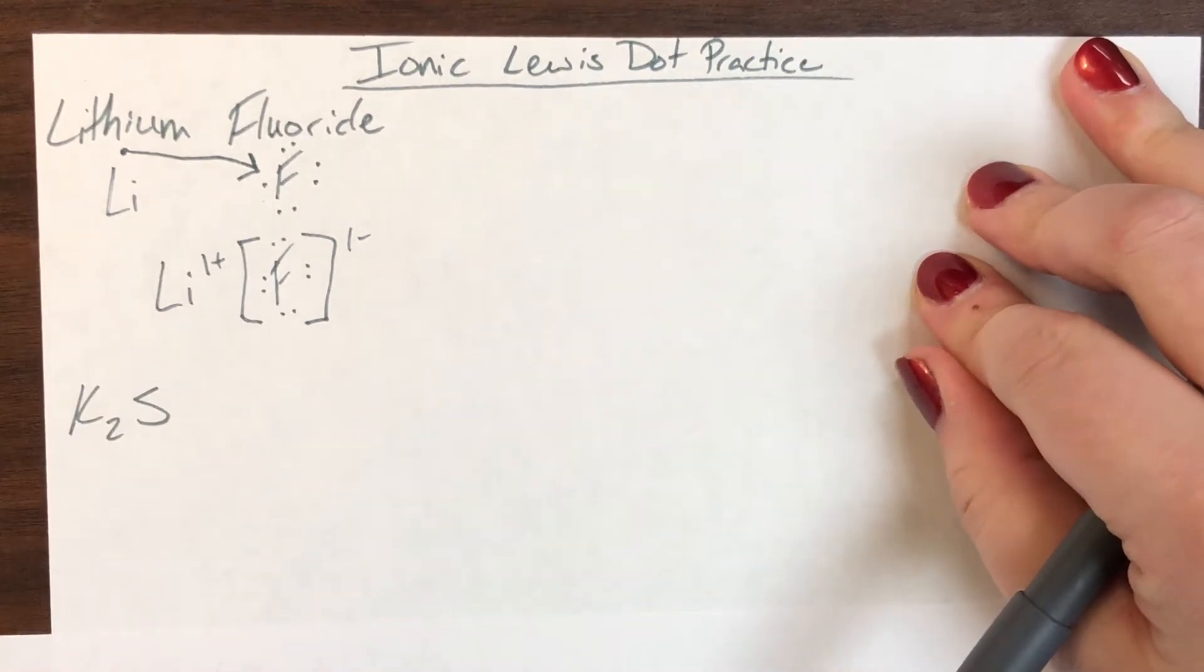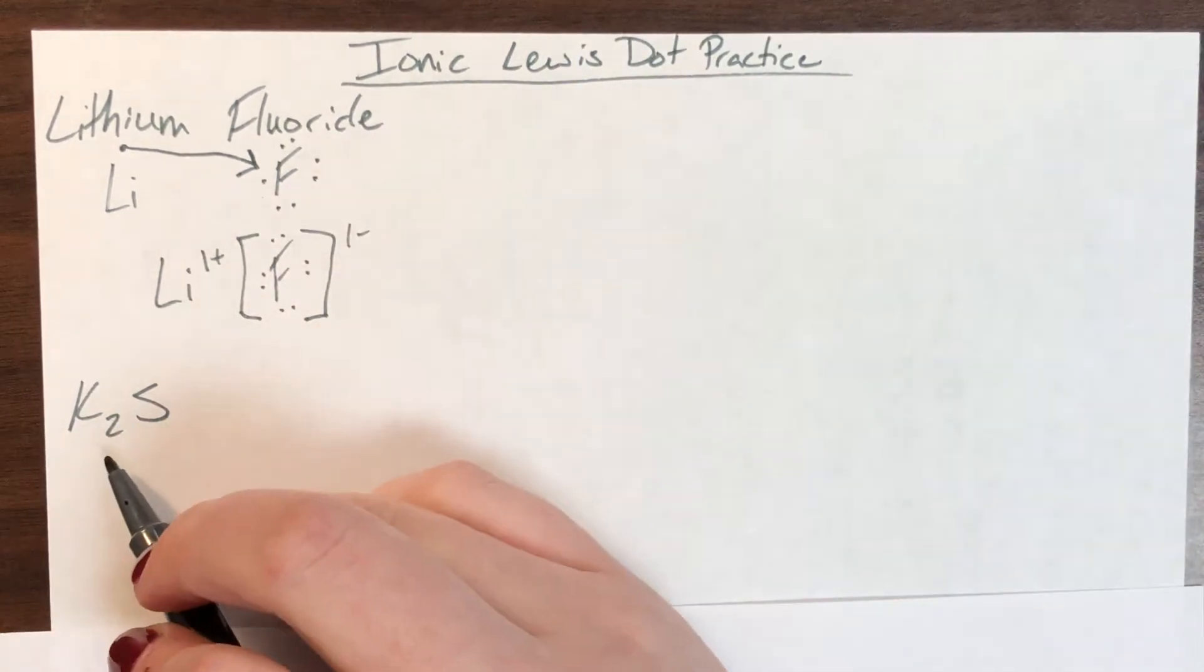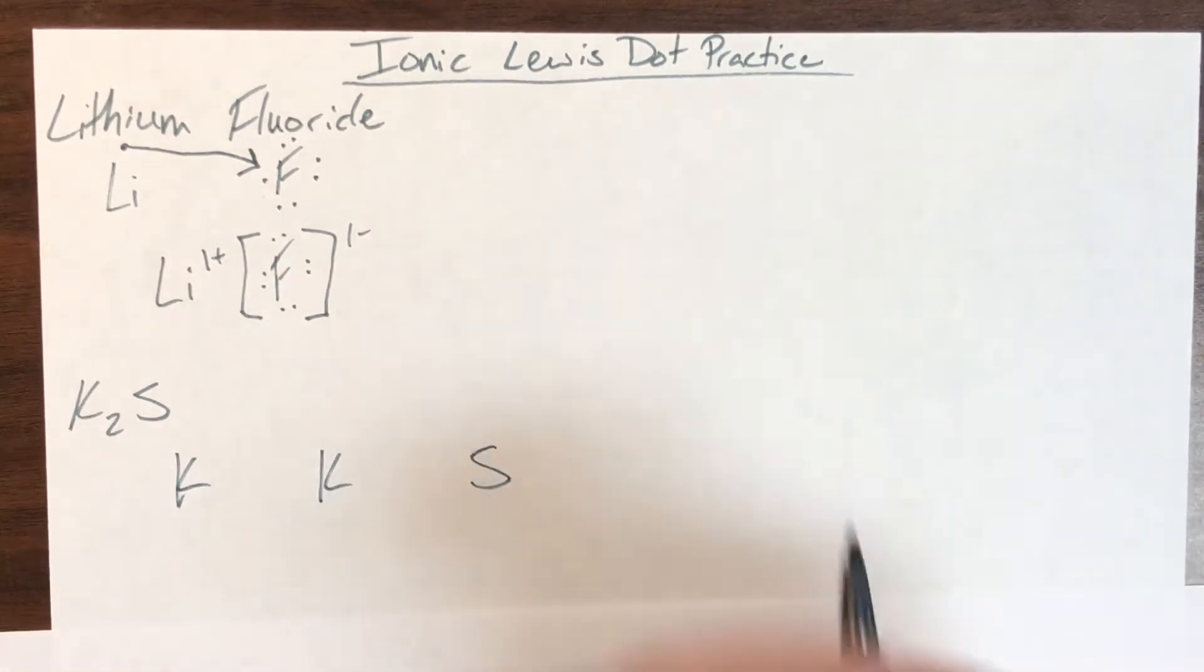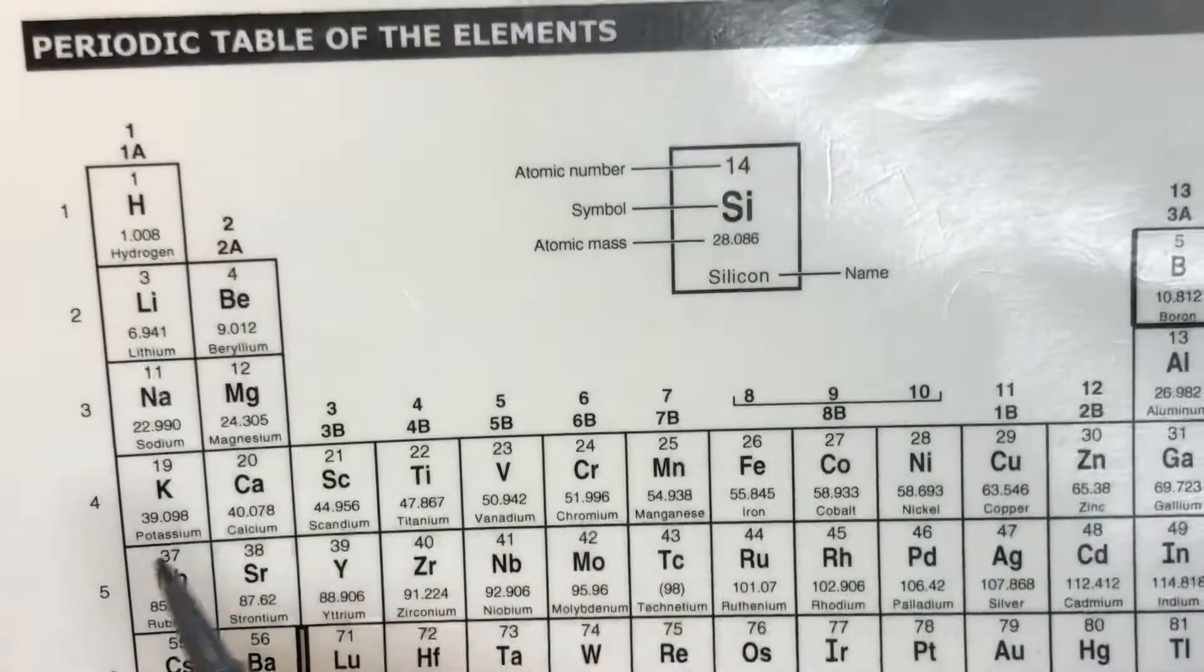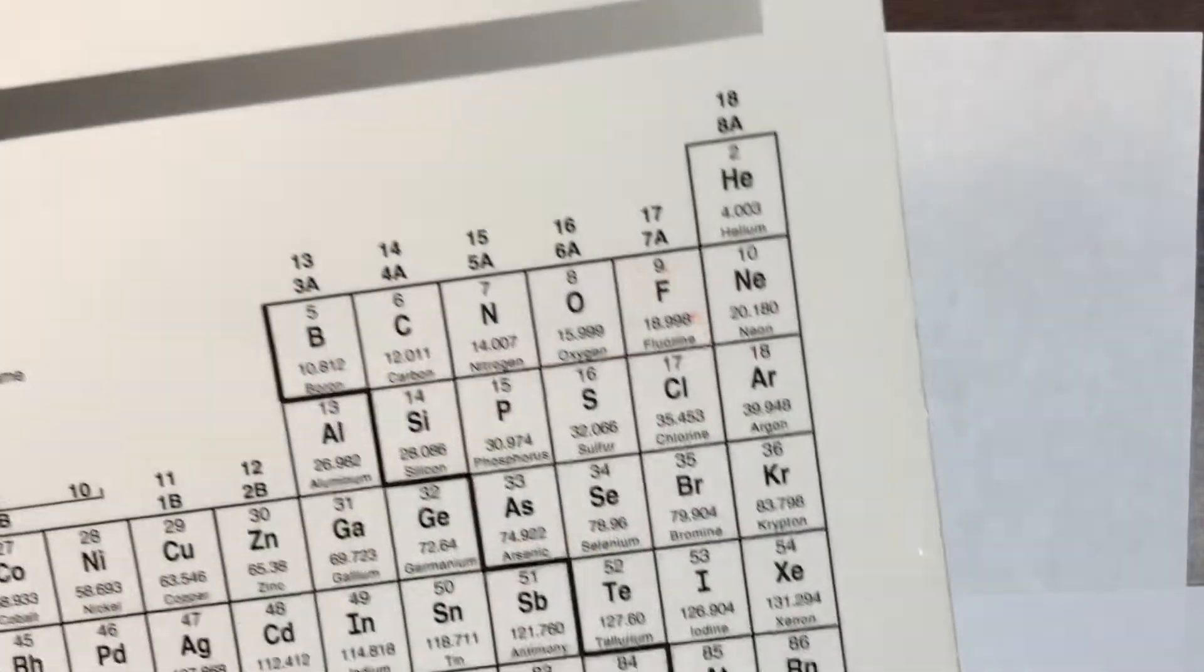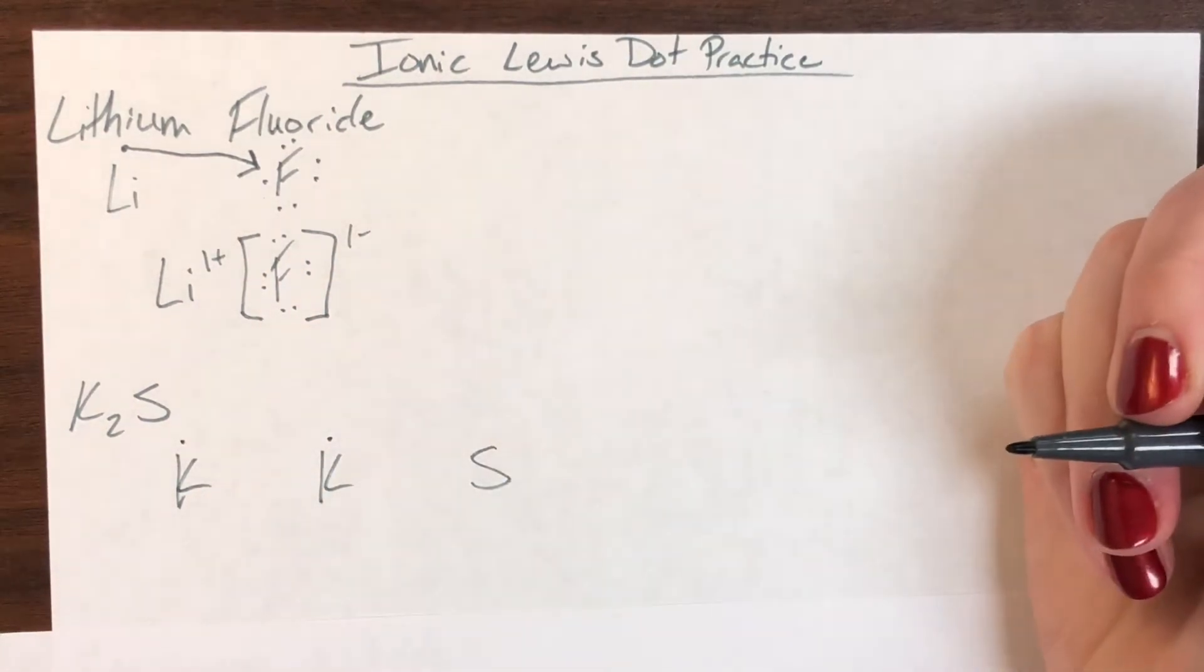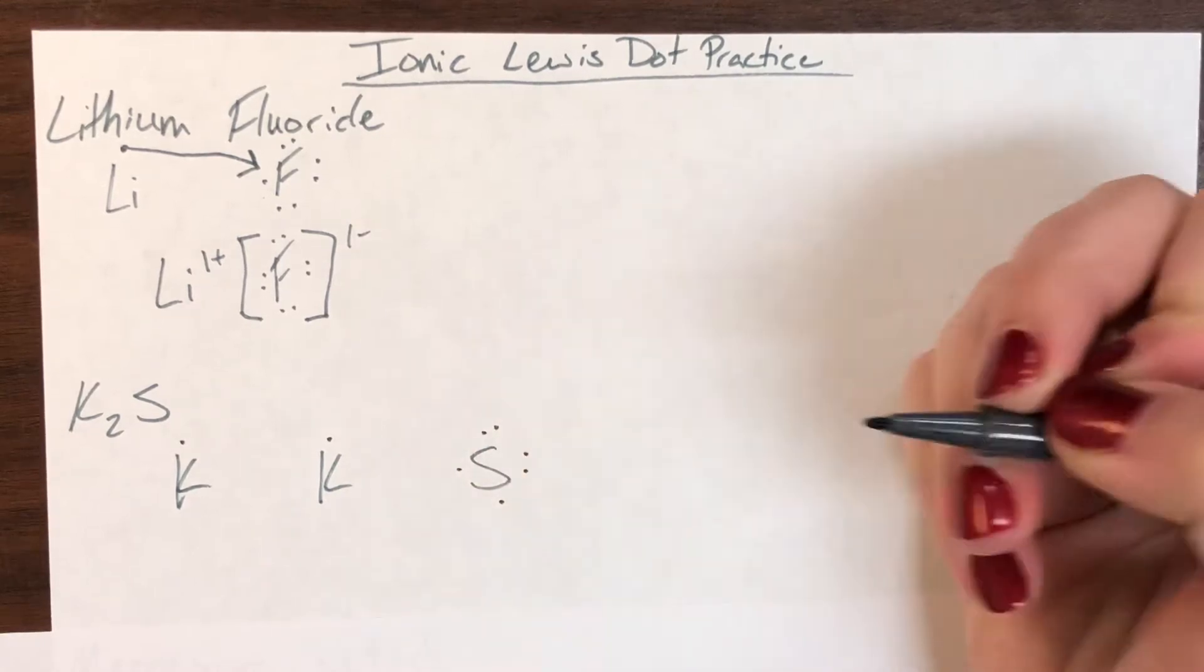My next compound that I have is K2S. This tells me that I need two potassiums and one sulfur so I'll go ahead and I'll write out two potassiums and one sulfur. Potassium is in column one so each potassium needs one valence electron. And sulfur is in column six which means that it needs six. So I'll add those one valence electrons to each potassium and then I will add six valence electrons to sulfur.